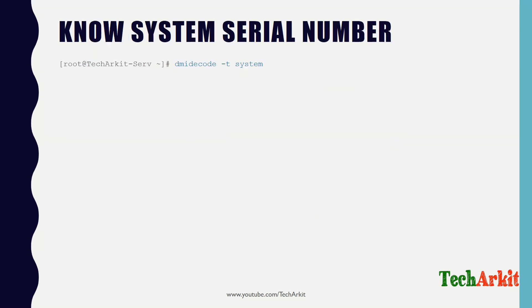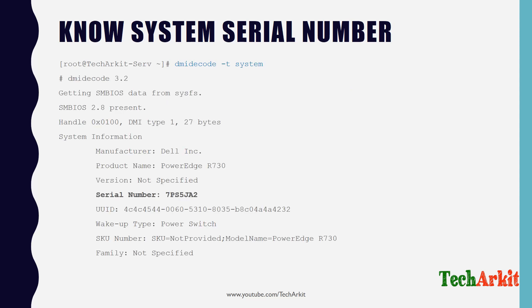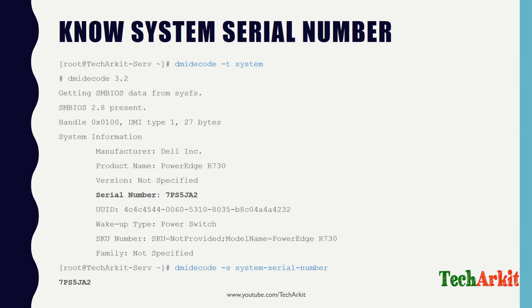To get the serial number using dmidecode, use the command: dmidecode -t system. This provides detailed information including the manufacturer (brand), product (model, such as PowerEdge R730), serial number, and UUID. If you only want the serial number, you can use: dmidecode -s system-serial-number, which will output only the system serial number.